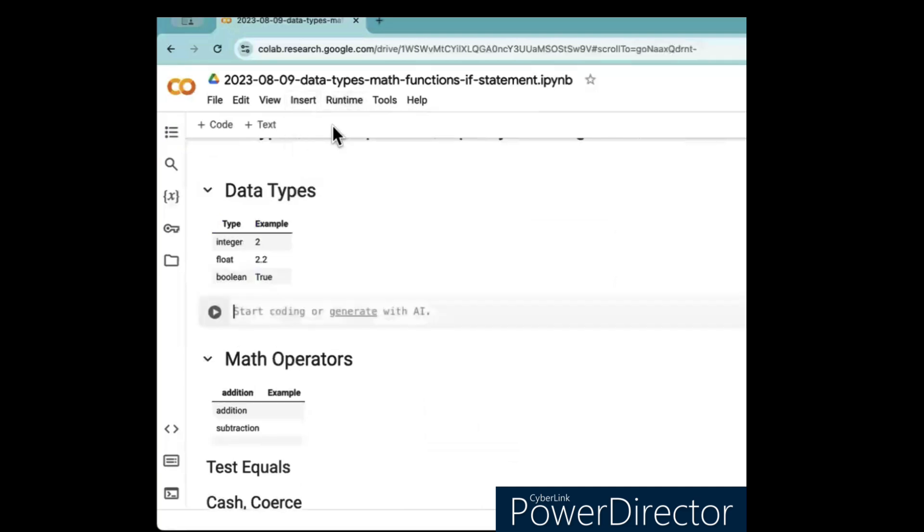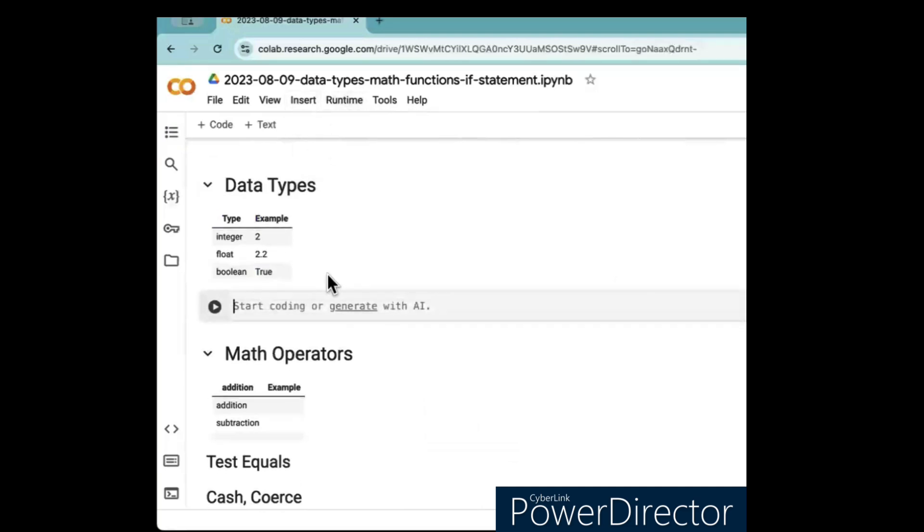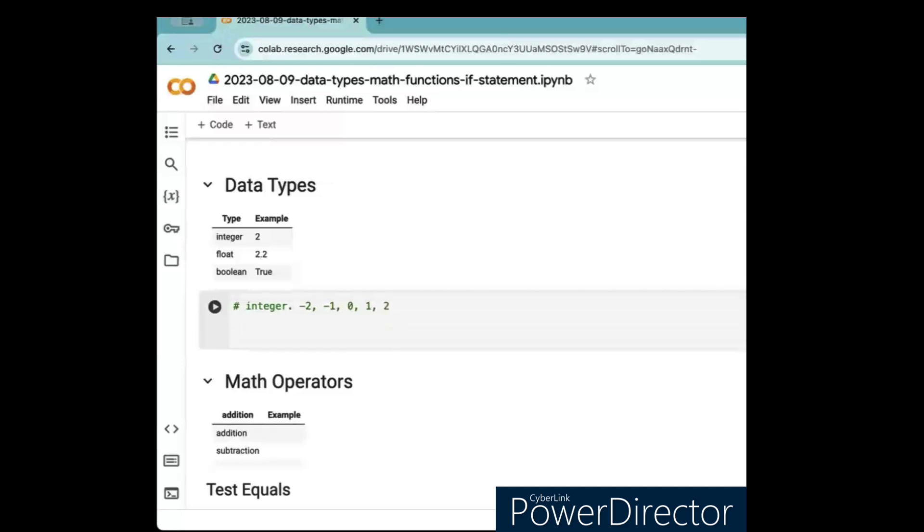Insert code cell. All right, so we have the basic data types. For example, an integer. And integers are the numbers, what? Minus two, minus one, zero, one, two. Okay, now we can make an integer by just saying anything. We could say walker equals two. We could say x equals two.